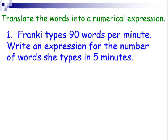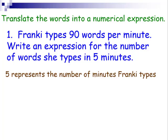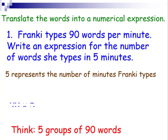Frankie types 90 words per minute. Write an expression for the number of words he types in five minutes. Five represents the number of minutes Frankie types. Think of five groups of 90. So we can write it three different ways, but remember, the way that we prefer to write it is using the parentheses. 90 times five.